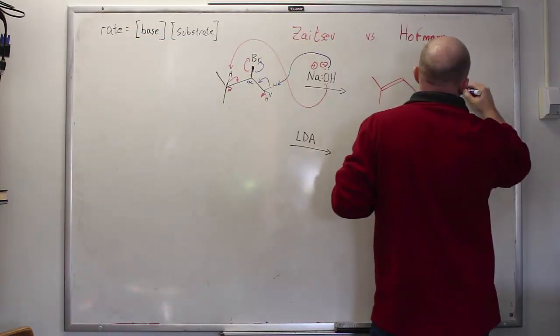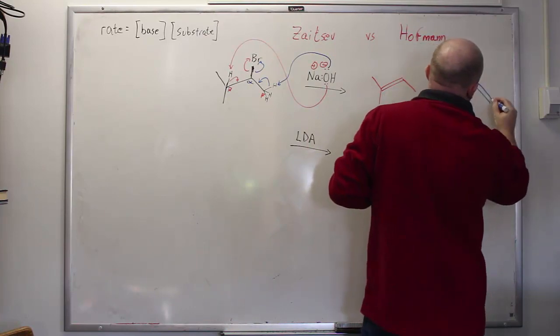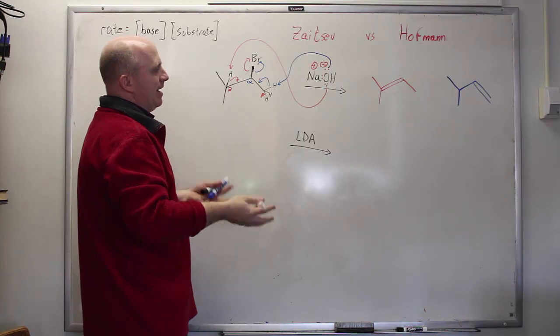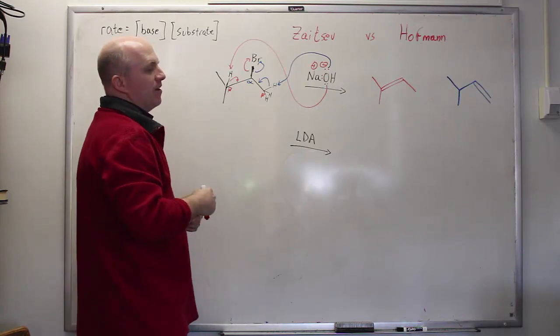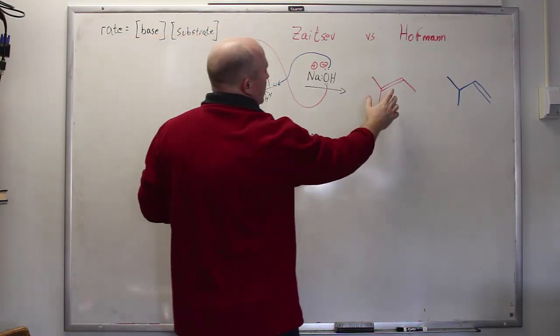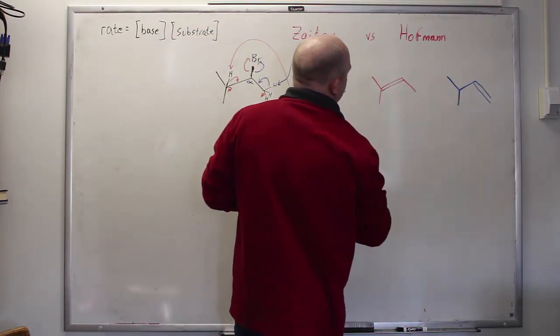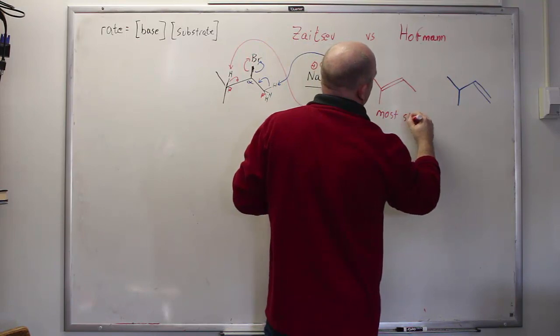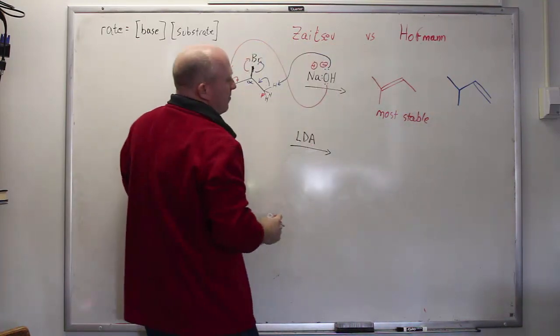In terms of which product is kinetically favored or thermodynamically favored, then things become quite a bit more complex. But if we're trying to decide which of these is the more stable product, this is the most stable possible double bond that could be formed from this structure.